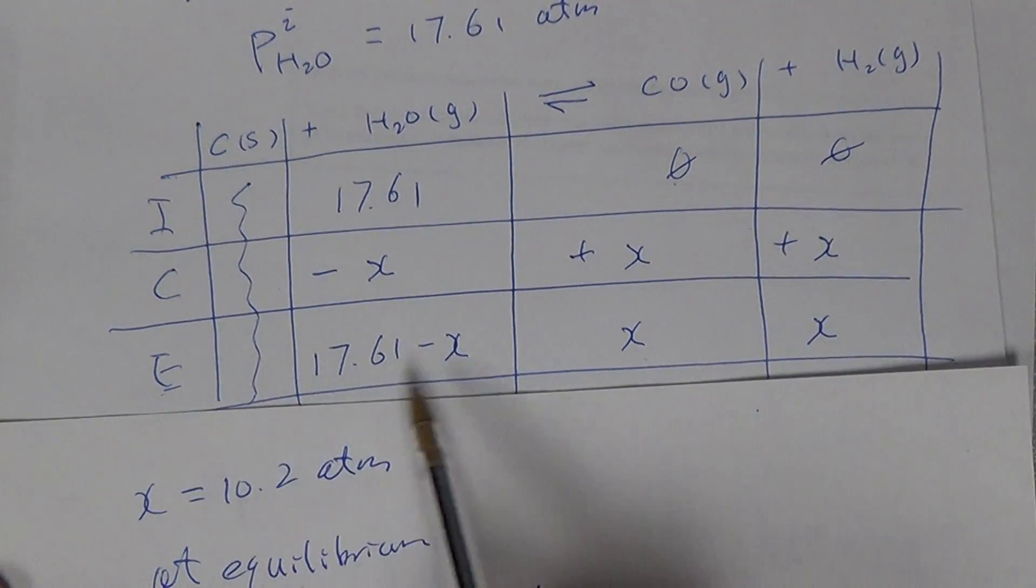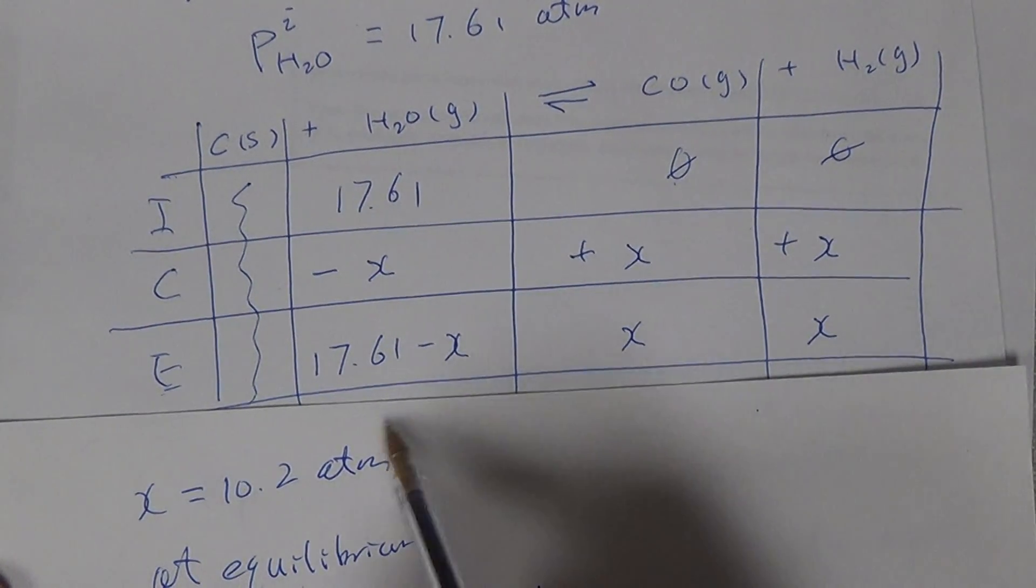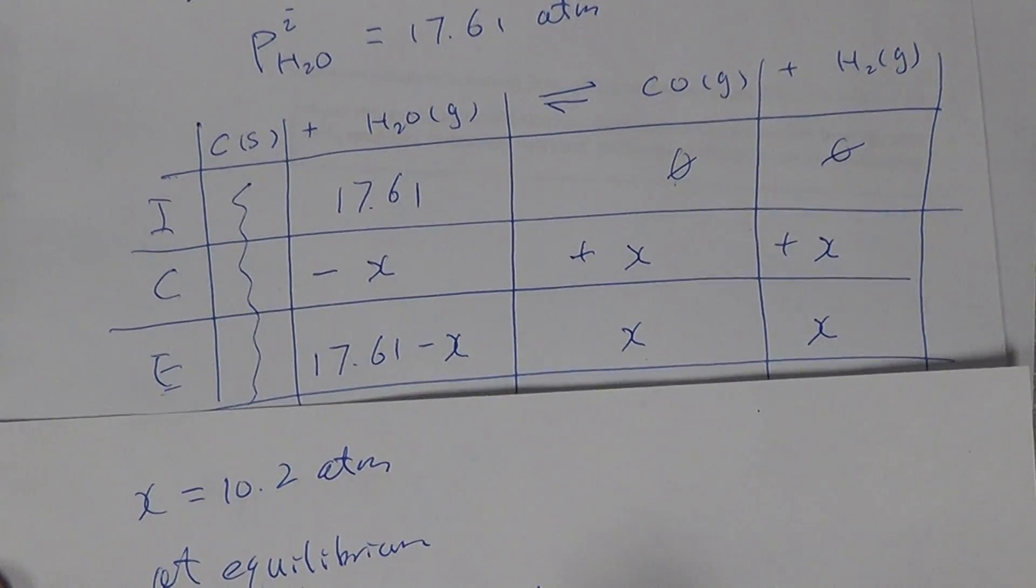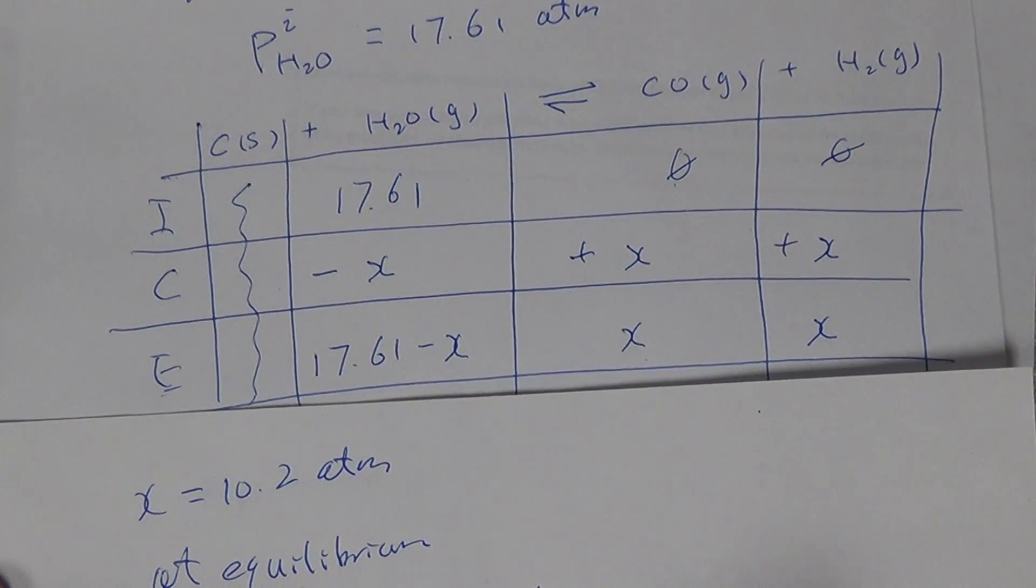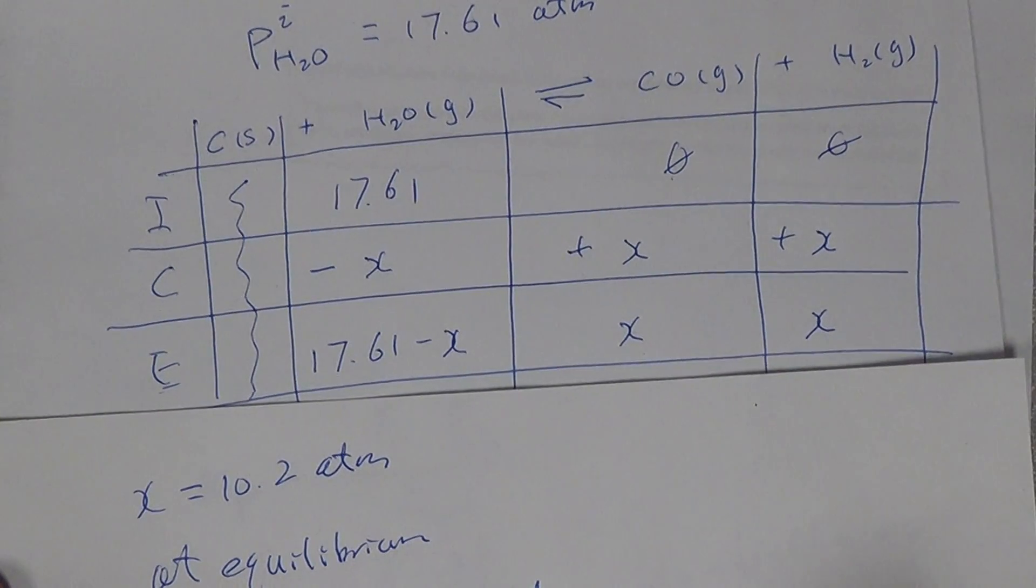At equilibrium for H2O, we call it pH2O equilibrium equals 17.6 minus x, so 17.6 minus 10.2.